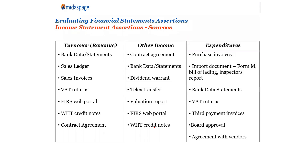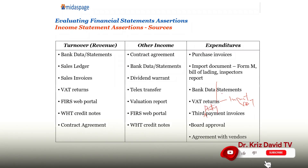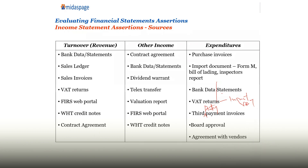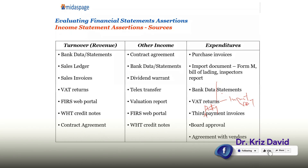Also use bank data and bank statements. Then check VAT returns to look for input VAT — you can use this to confirm your cost of sales. Then ask for third-party payment vouchers or invoices. There are some expenses that the board has to approve before they can be recognized, so ask for board approval as well, along with agreements with your vendors.